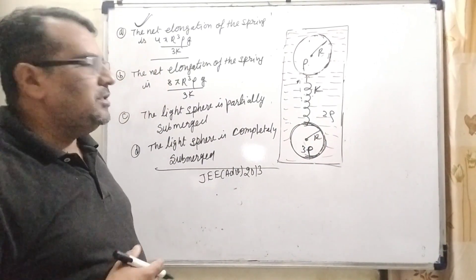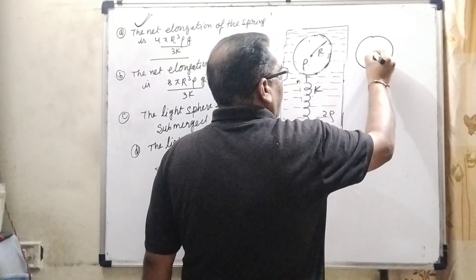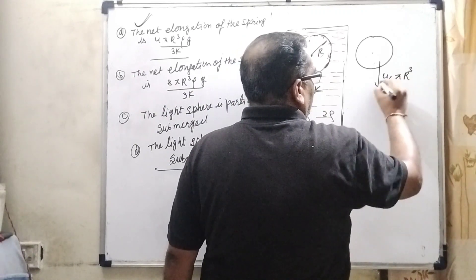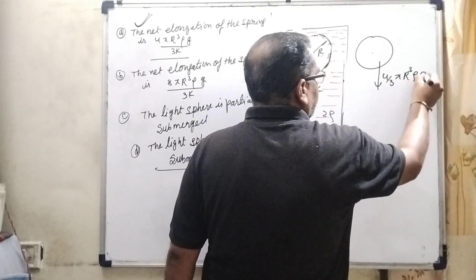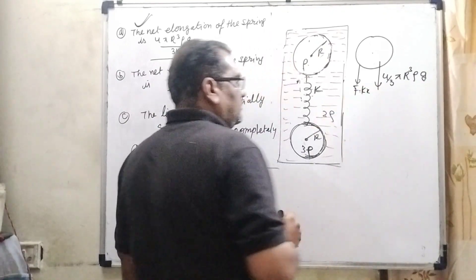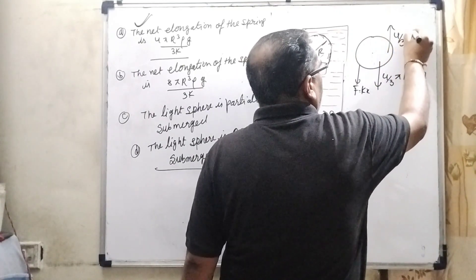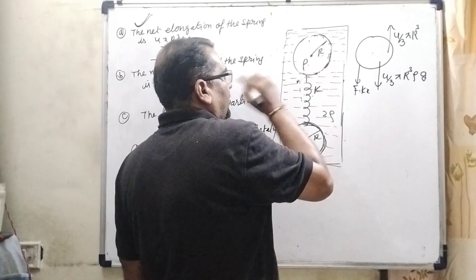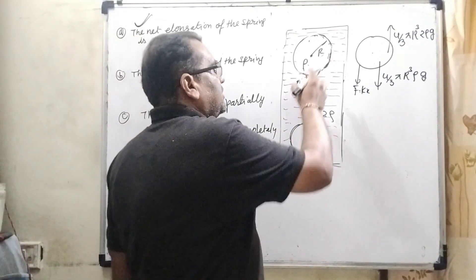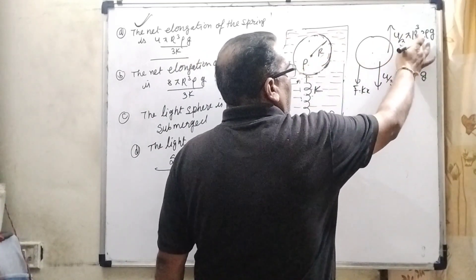Now looking at the next options, I have redrawn the free body diagram for both spheres. For the first (upper) sphere: weight (4/3)πR³ρg acts downward, spring force Kx acts downward, and upthrust force (4/3)πR³(2ρ)g acts upward — since the buoyancy force equals the weight of the liquid displaced by the sphere.